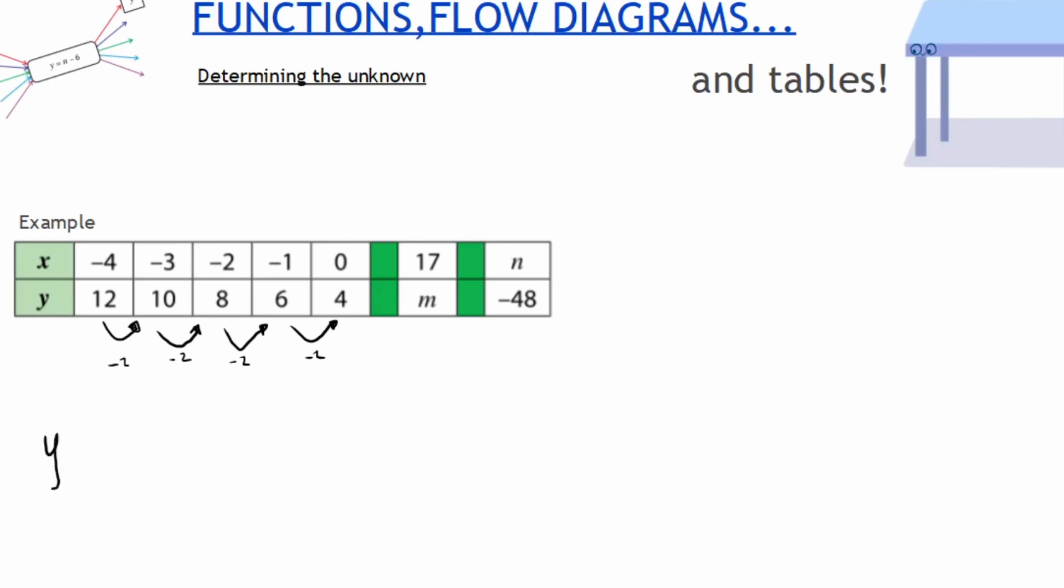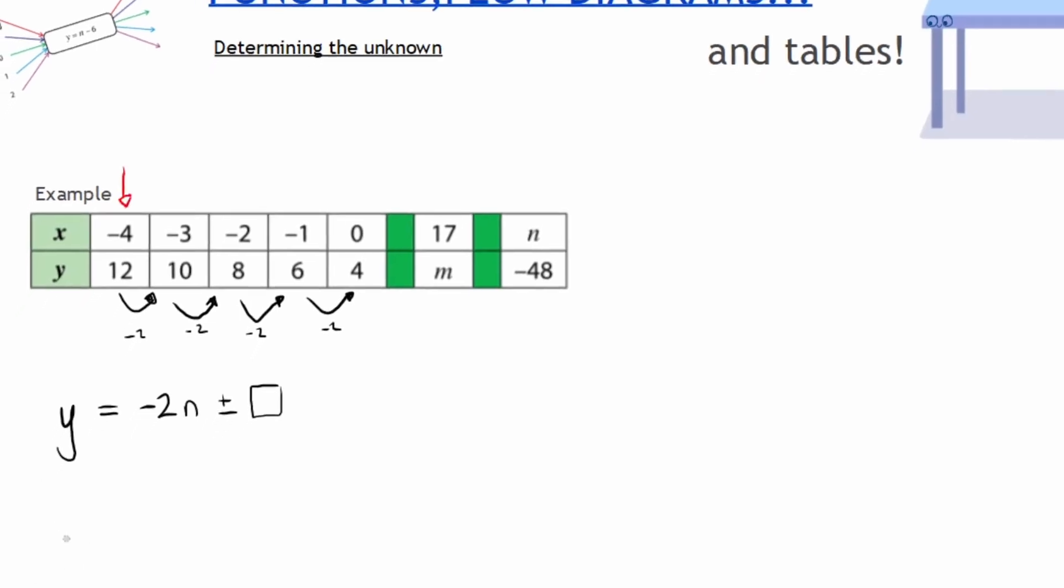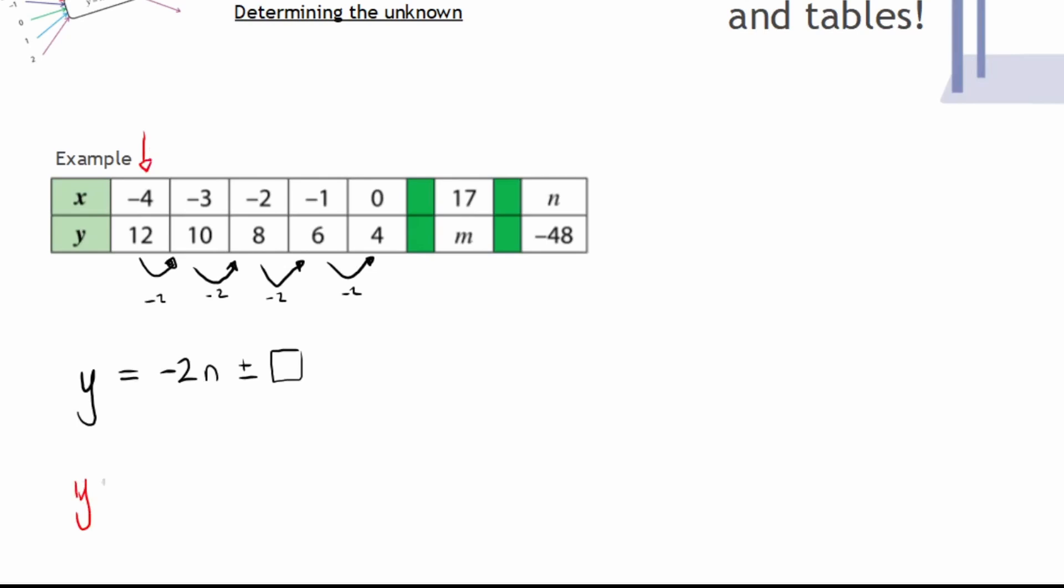So I know I'm going to start with my output y equaling the constant difference multiplied by n, and then I'm adding or subtracting something. But what is that that I'm subtracting? Well, I will always look at the first example, the first input and the output, to make it easiest. So what is my output? My output is 12.